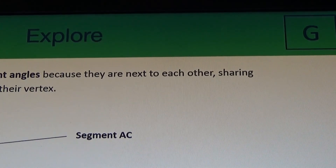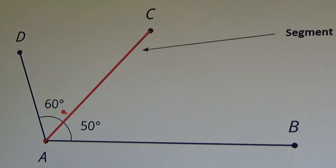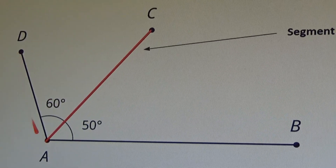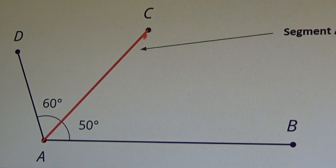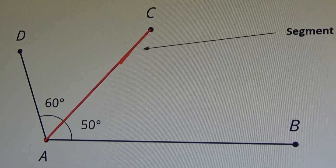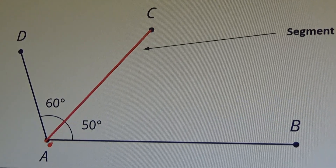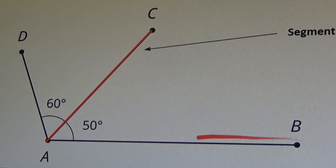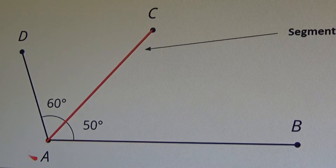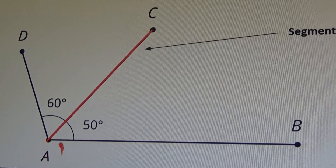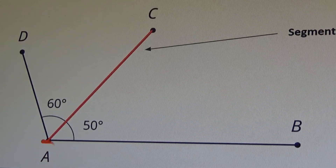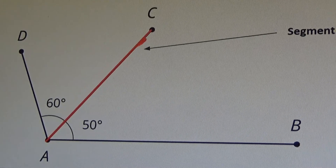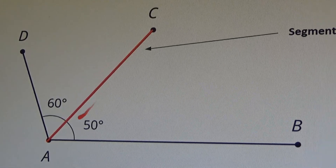Slide G. Let's remember that angles DAC and CAB are adjacent angles because they share a vertex A, and they also share segment AC.